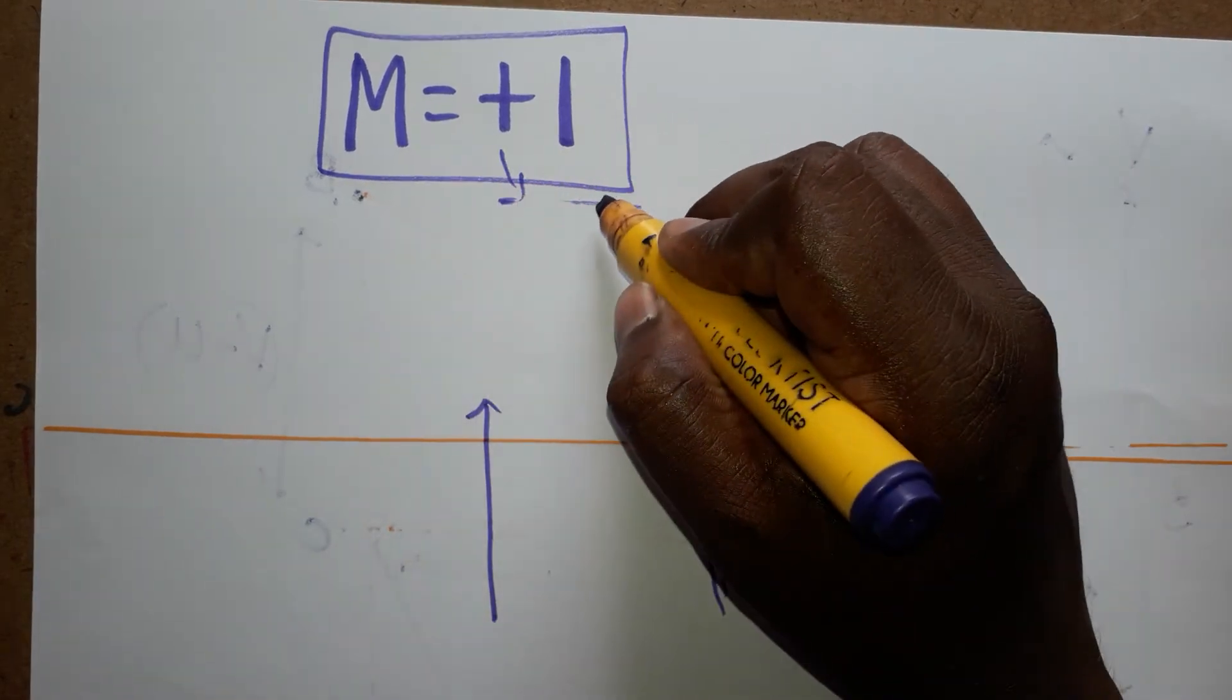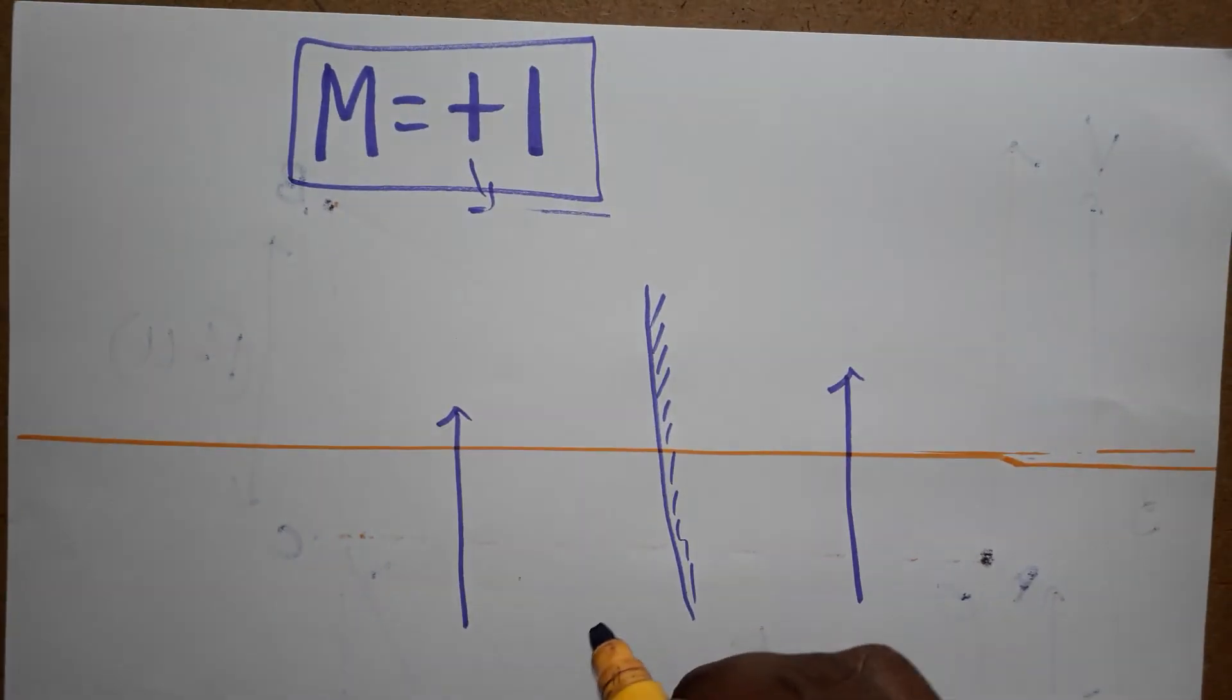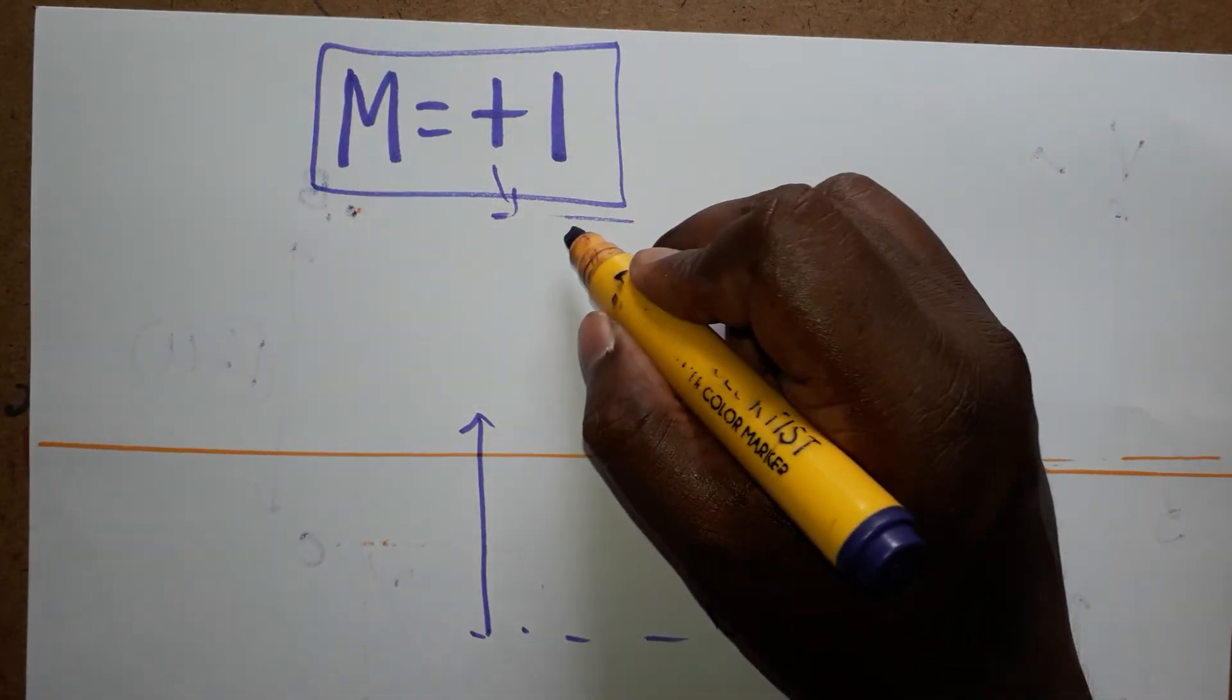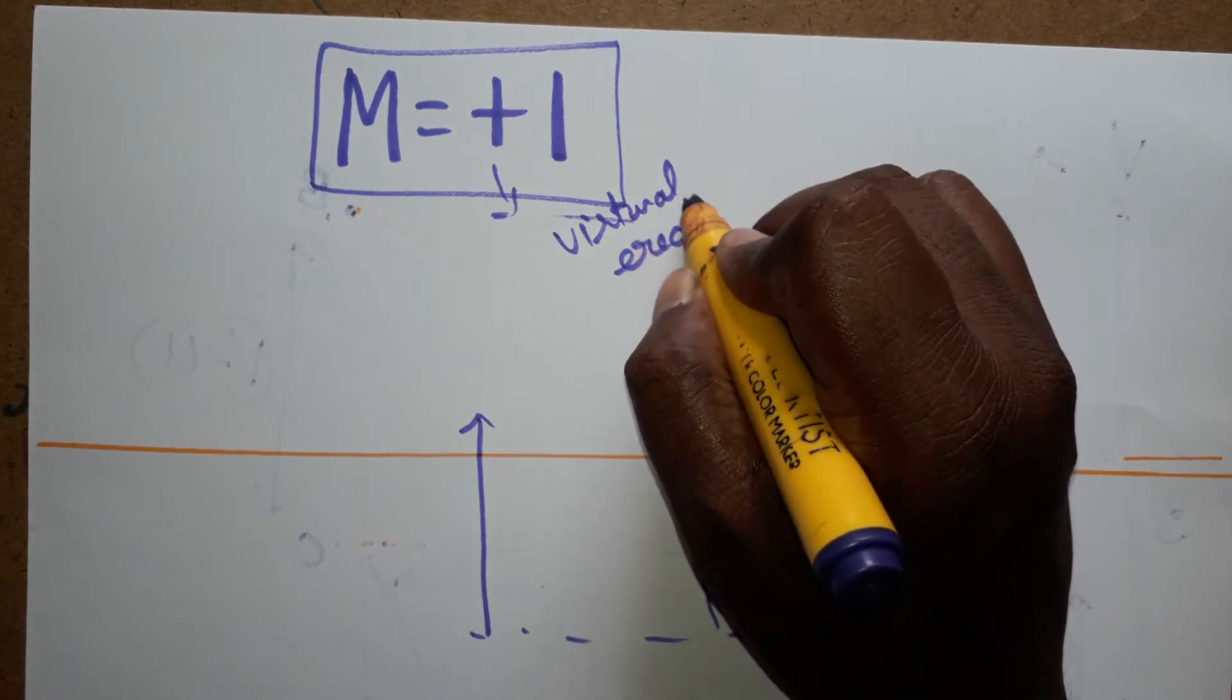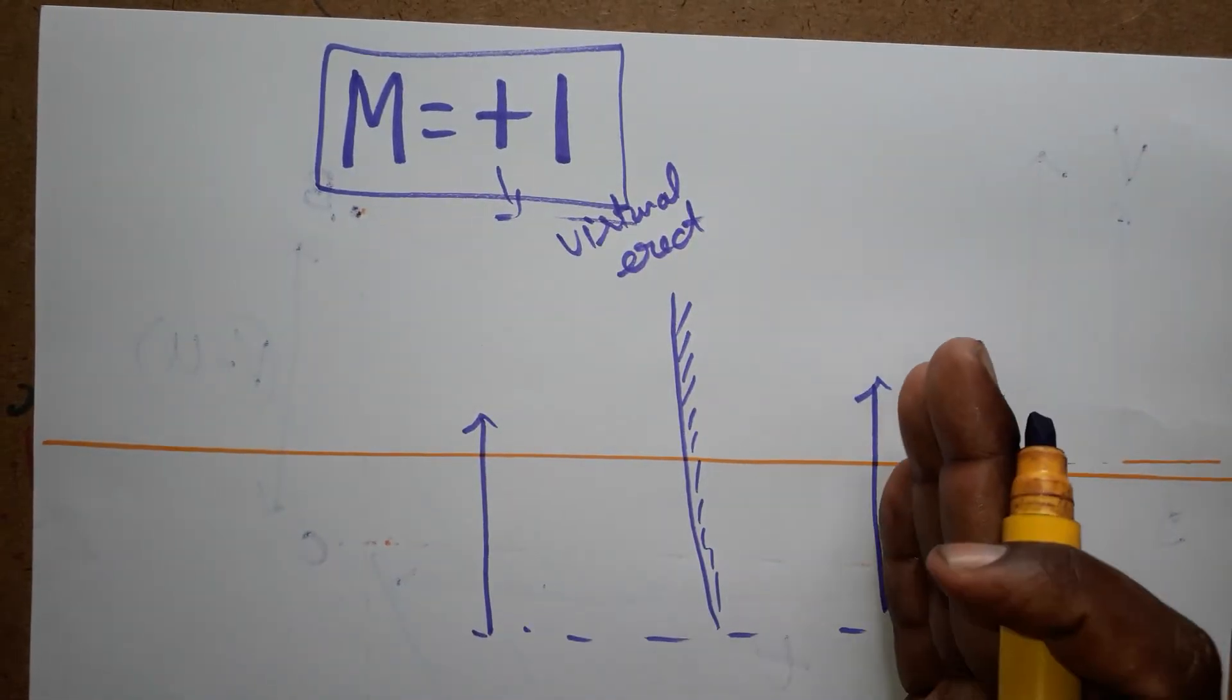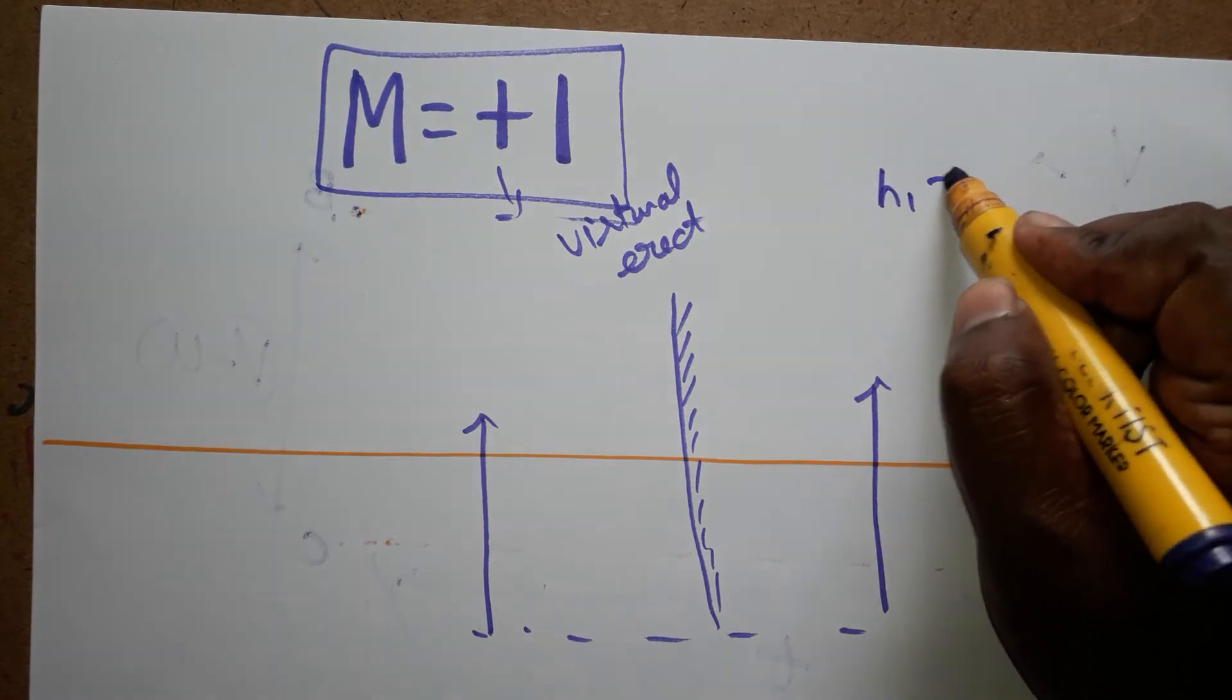Plus is representing virtual erect. So in this plane mirror case, plus indicates virtual and erect. In this mirror case, the image will be virtual and erect.